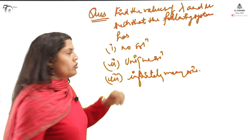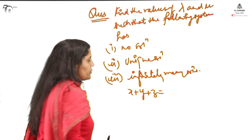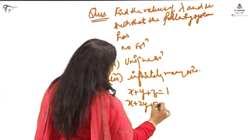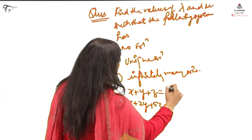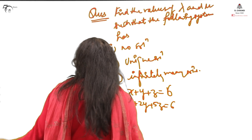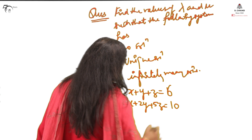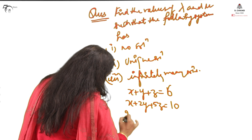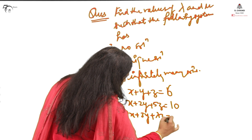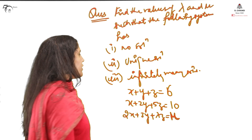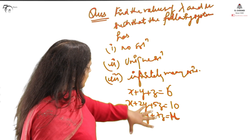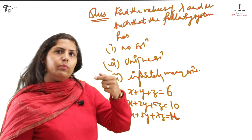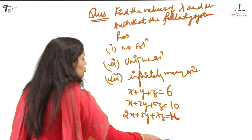The system of linear equations is: x + y + z = 6, x + 2y + 5z = 10, and the third equation is 2x + 3y + λz = μ. Lambda and mu are unknowns, and their values will determine whether the system has no solution, unique solution, or infinitely many solutions.